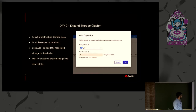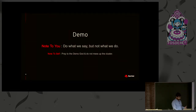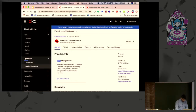Moving on to day-two operations: we have implemented cluster expansion. Now that you've monitored your cluster and storage is almost full, how do you expand? In a similar manner to installation, you provide the storage class backed by your infrastructure — in my case AWS, so I choose GP2. You specify how much raw capacity you want; for 4 TiB raw capacity with three-way replication the total usable capacity will be about 1.2 TiB. You click Add and it takes around one minute to add this capacity to the cluster.